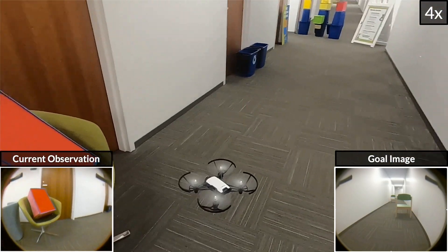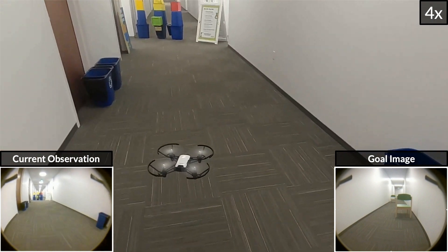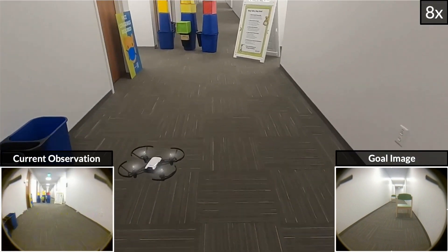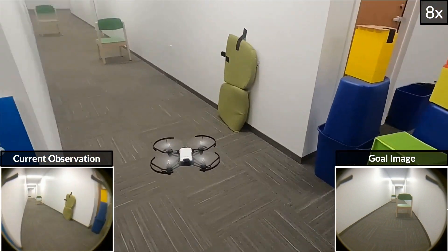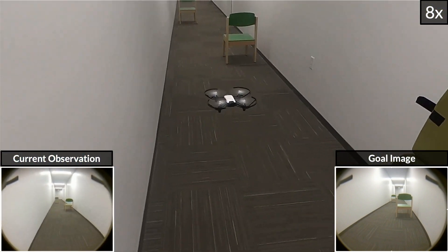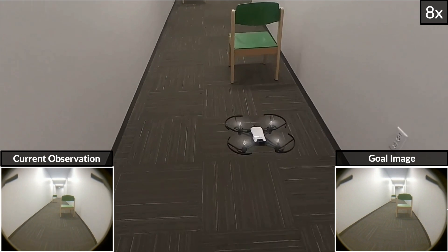This includes controlling an underactuated telequadrotor that is restricted to navigate in a 2D plane in a new indoor environment. Using only the egocentric RGB image shown on the bottom left as the observation, the omnipolicy generalizes to this new robot, despite never having seen any data from an aerial robot.